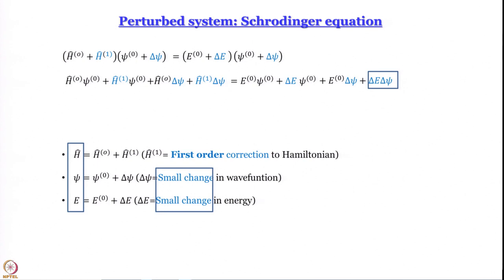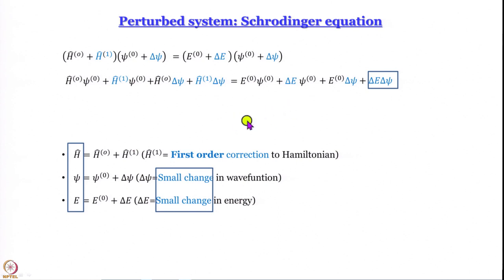So δE·δψ equals zero. Is there any other term where both quantities are small? Ĥ⁽¹⁾δψ: the perturbation contribution to the Hamiltonian is small, and δψ is also small, so we can neglect Ĥ⁽¹⁾δψ as well. Out of the eight terms, two are neglected because they are very, very small.